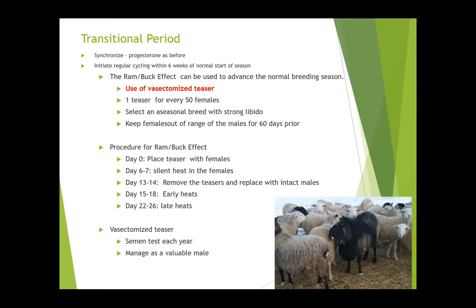In the transitional period, basically the goal is to breed a little earlier than you normally would. The best method, if it's August and you want to breed in August to September, is to use a vasectomized teaser — a ram that hormonally and behaviorally is a full male but has had a vasectomy so he's sterilized. I recommend often that clients choose a teaser that's a different breed than their flock, so when they look out the window in the morning they don't have a panic attack — they go 'oh yeah, we put the teaser out yesterday' rather than 'oh my god, the rams are out with the ewes.'